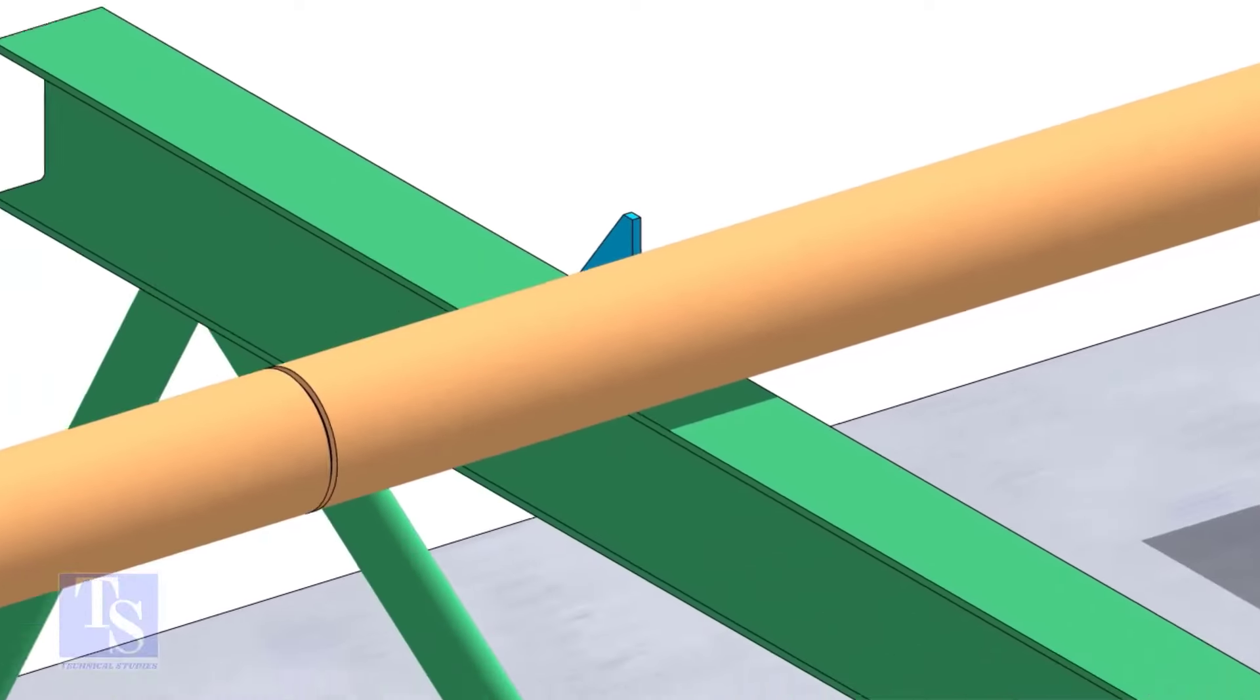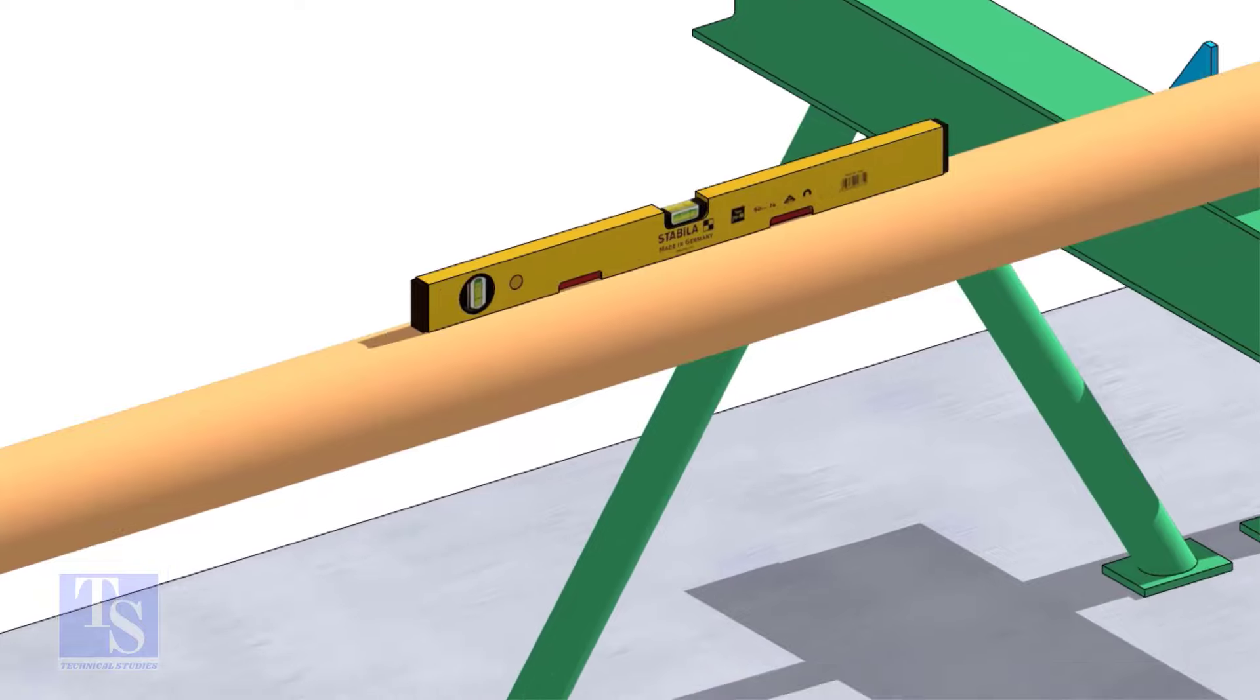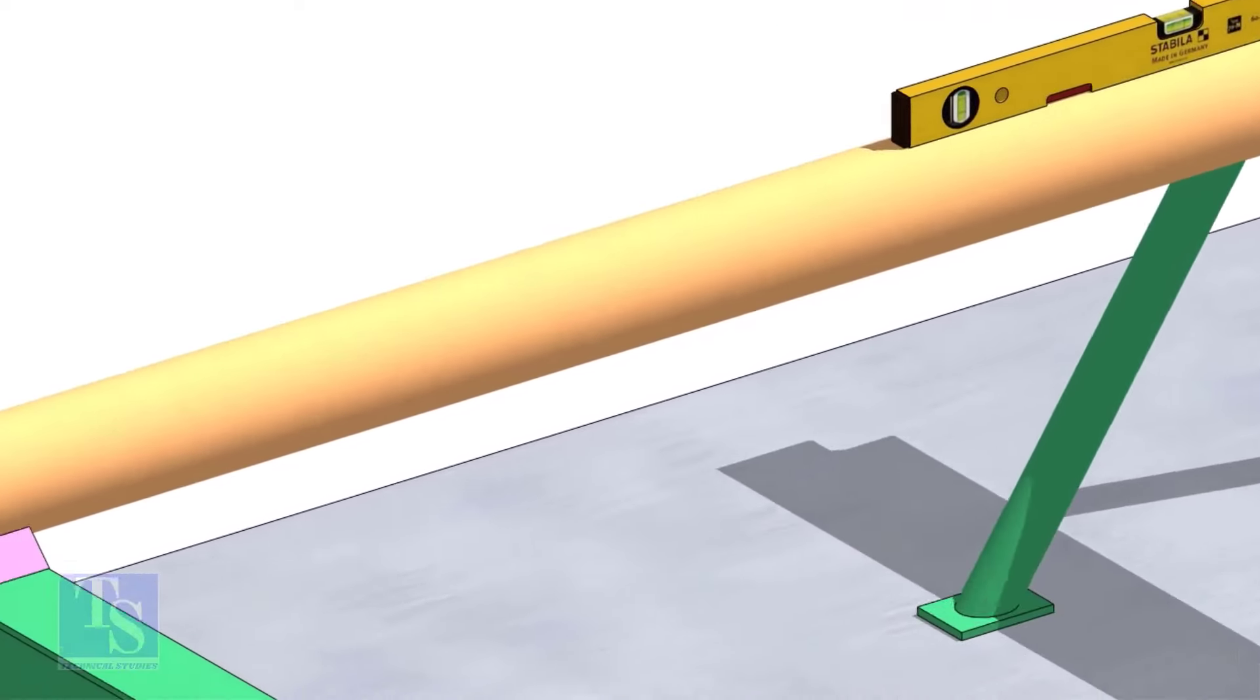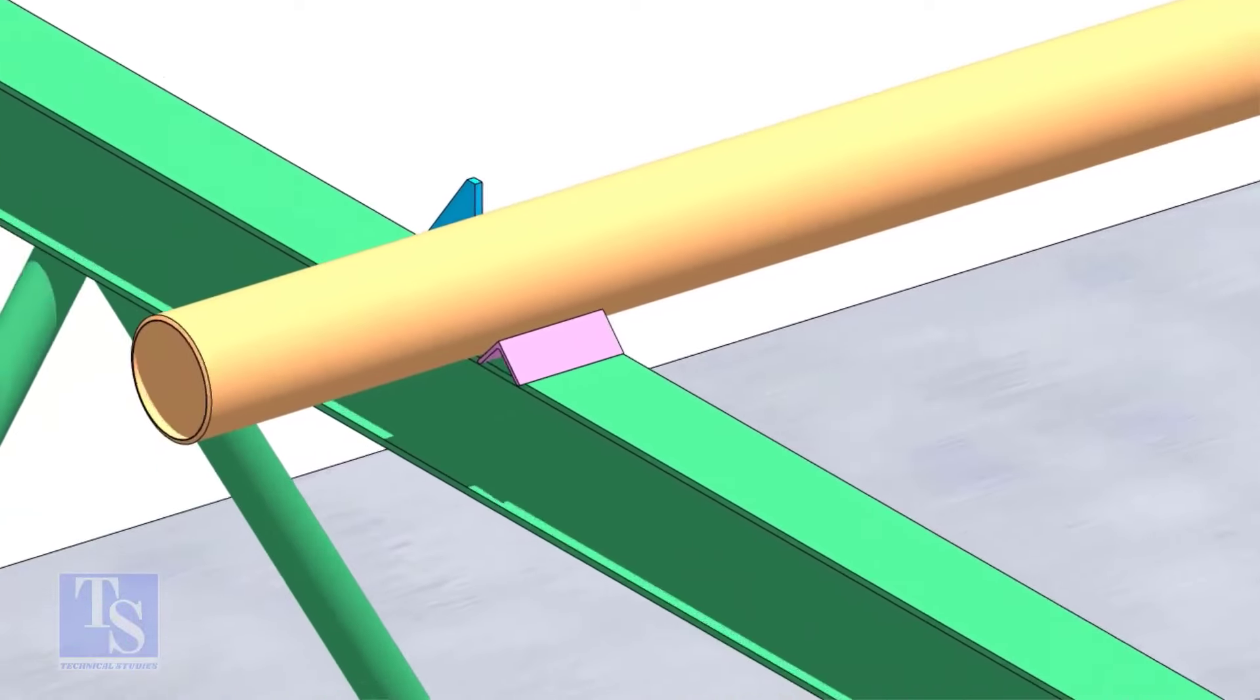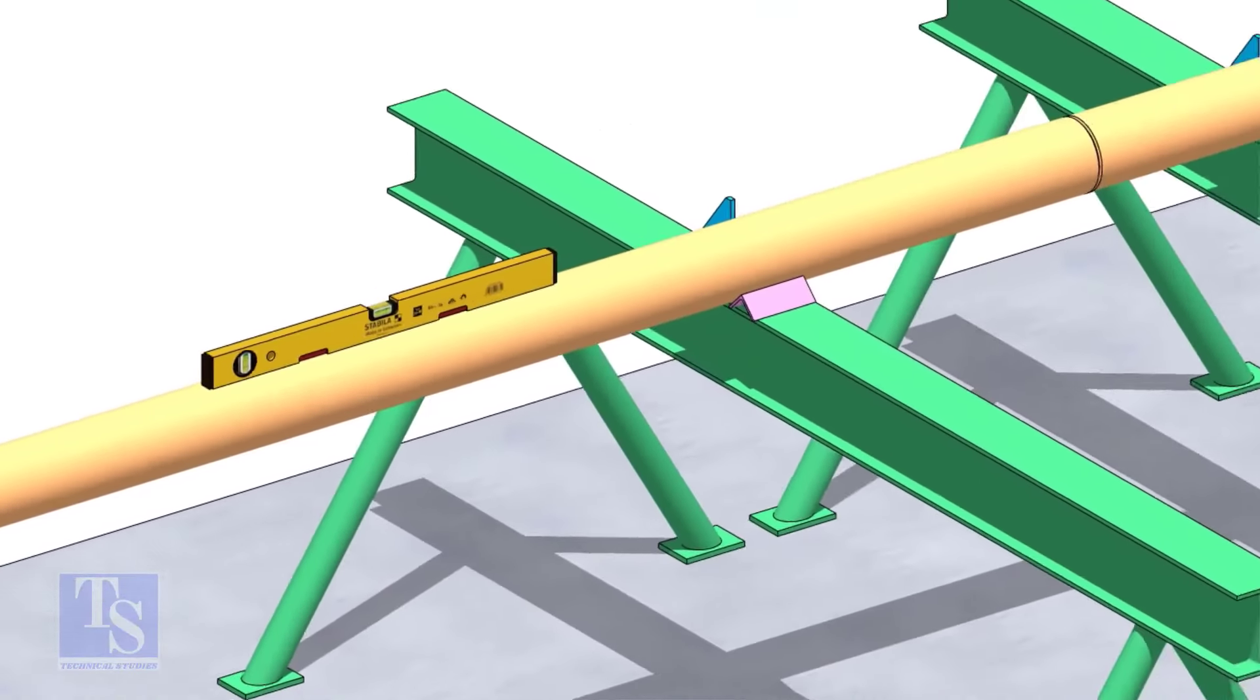You can cross-check the level of the pipes. Arrest the pipes from the other side using wedges or angle stubs.